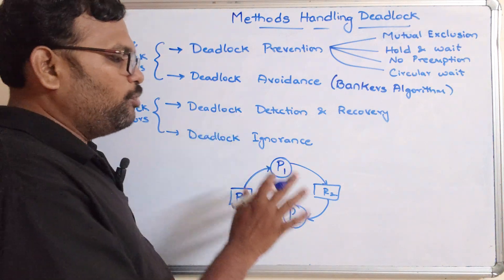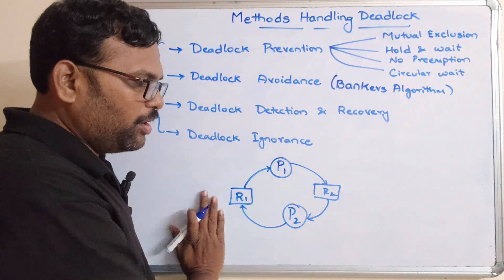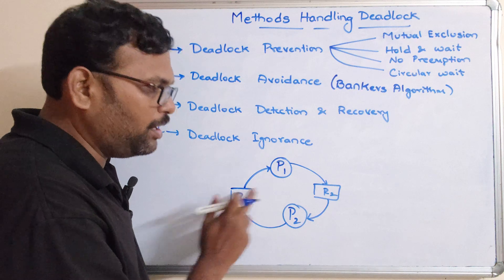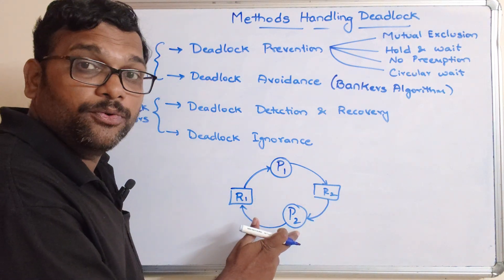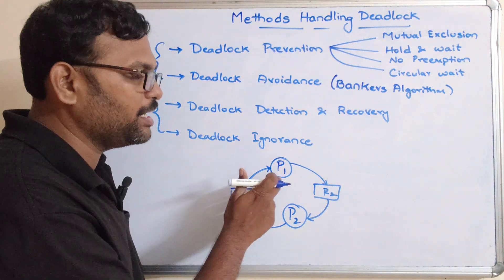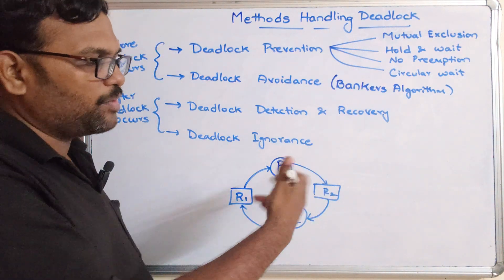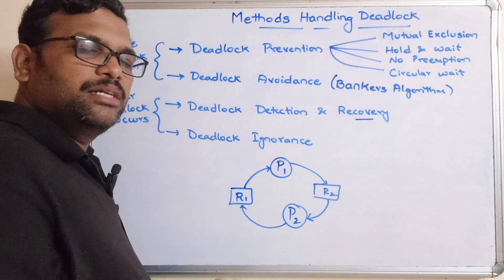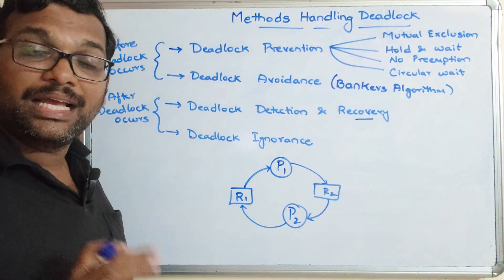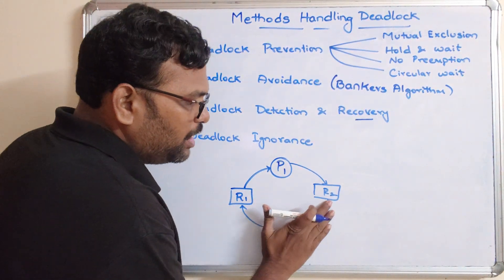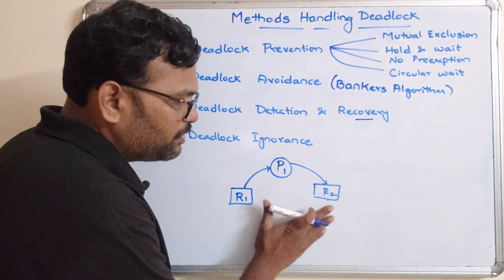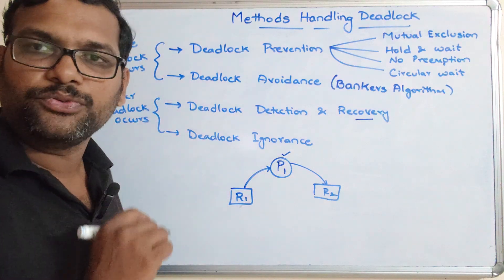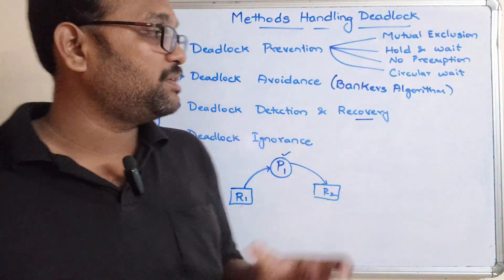P1 can complete only if it has R1 and R2, but R2 is already allocated to P2. P2 can complete only if R1 is available, but R1 is allocated to P1 — circular wait. One possible recovery is killing one of the processes. If we kill P2, whatever resources it held are released, R2 becomes available, R1 is allocated to P1, and P1 completes its execution. Killing a process is one solution for deadlock detection and recovery.